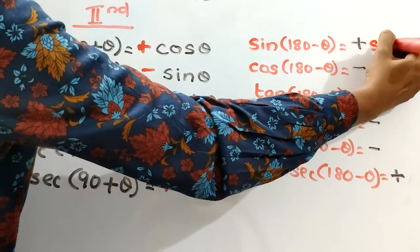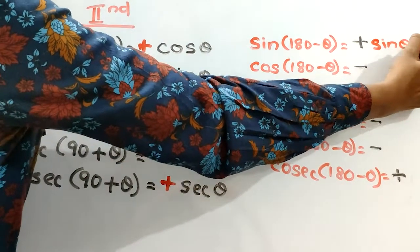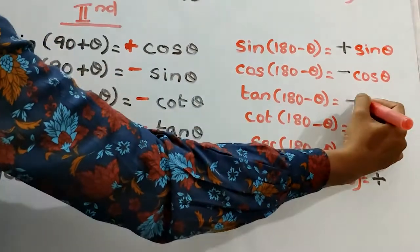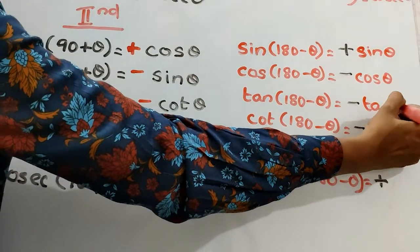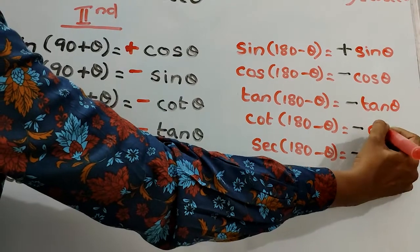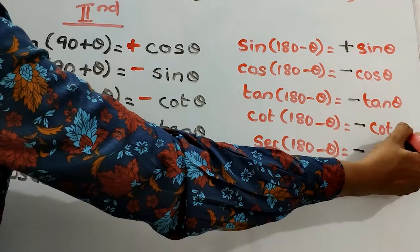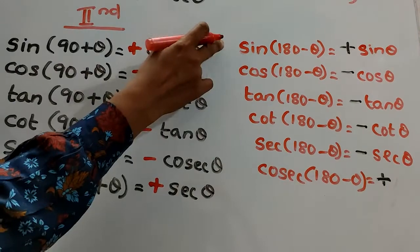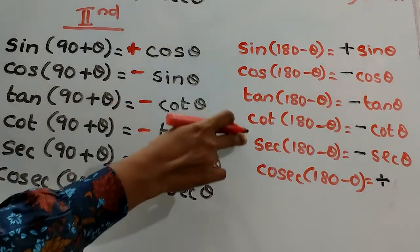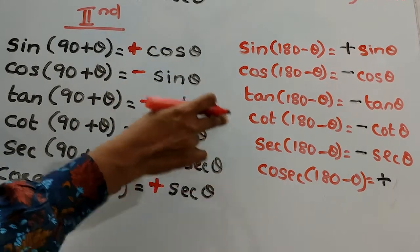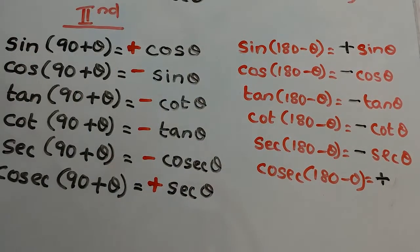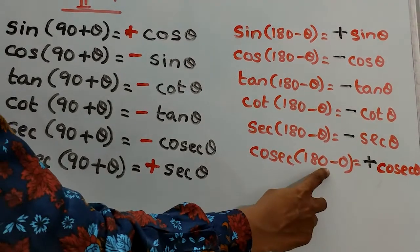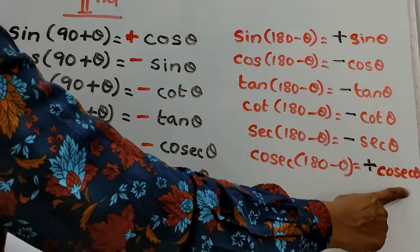Since we don't change the ratio, the answers are: sine θ, cos θ, tan θ, cot θ, sec θ. Wherever sine and cosec appear in the second quadrant, their answer is positive. So cosec(180° − θ) = cosec θ, and the others carry their respective signs.